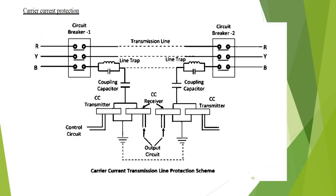Next, we are moving to carrier current protection, which is mainly used for the protection of long transmission lines. In this scheme, the phase angles of the currents at the two ends of the line are compared instead of the actual current magnitudes. The phase angle of the line decides whether the fault is internal or external.